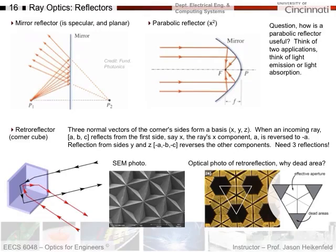Let's keep moving along. We've got to cover a lot for this first week because I have to give you everything you need for optics to start working with some basic optic elements. The next thing we're going to talk about is reflection. The simplest place to start is a mirror. The angle of incidence and reflection are the same — that's how you define a mirror surface.